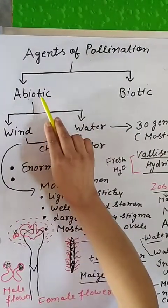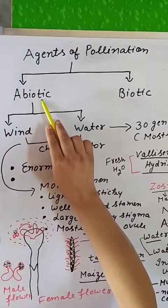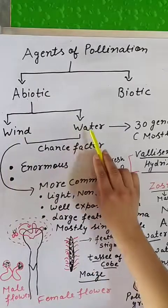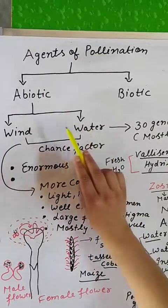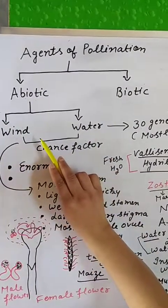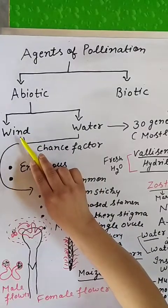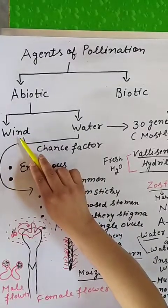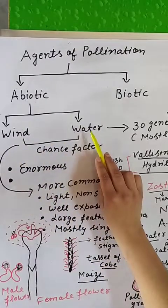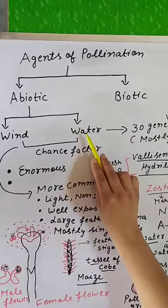Abiotic means the non-living agent. There are two non-living agents: first is the wind and second is the water. In those flowers where pollination takes place by wind, they are also known as wind pollinated flowers. And if pollination takes place with the help of water, they are known as water pollinated flowers.